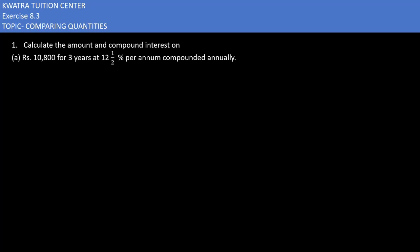So what do we give here? Principle is 10,800. Time is 3 years and the rate given to us is 12 by 1 by 2%. How do we change 12 by 1 by 2%? You can solve it by multiplying 12 and 2. It will be 24 and 24 plus 1 will give you 25. 25 by 2%. You have to find the amount and interest over it.